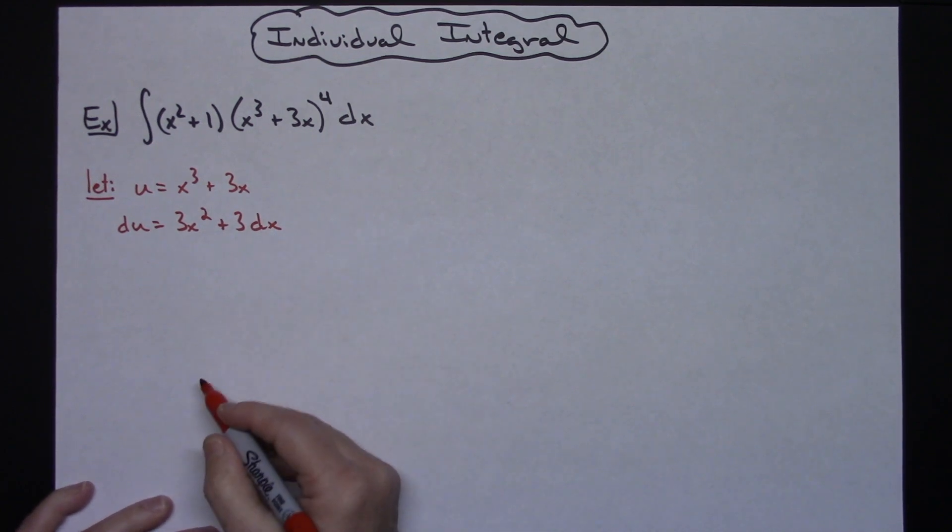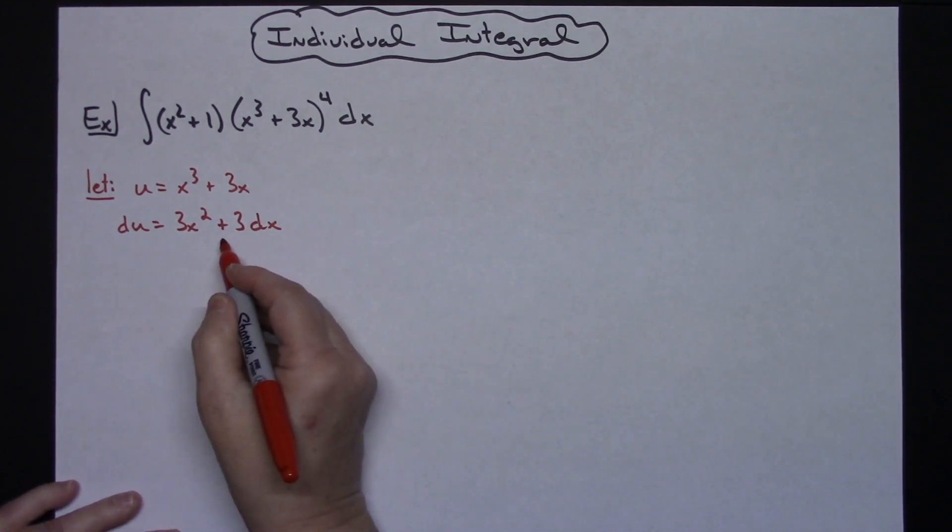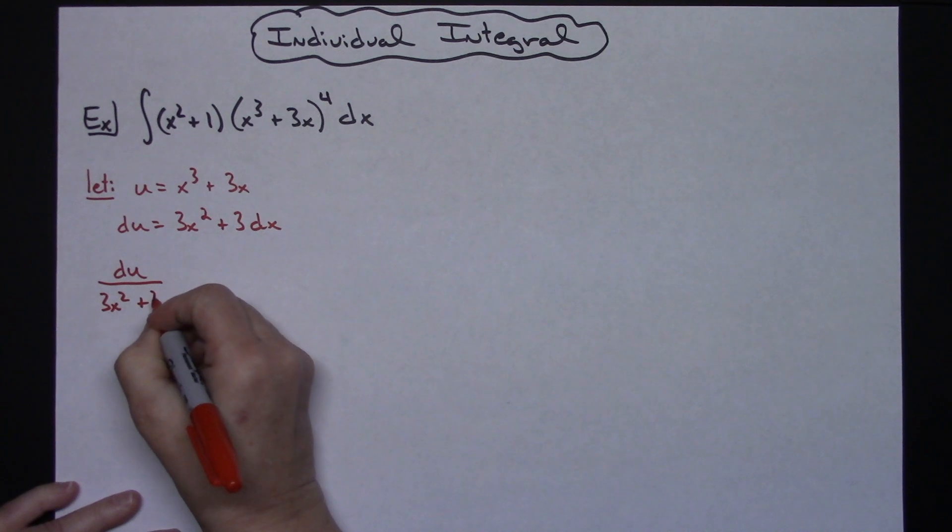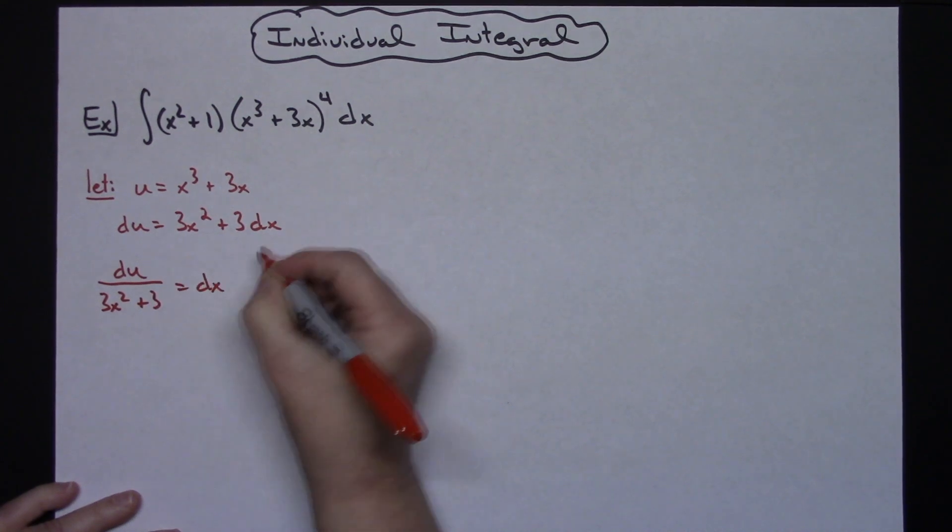Going ahead and solving all the way down for my dx, that would be dividing both sides by that 3x squared plus 3. I'll have du over 3x squared plus 3 is equal to that dx.